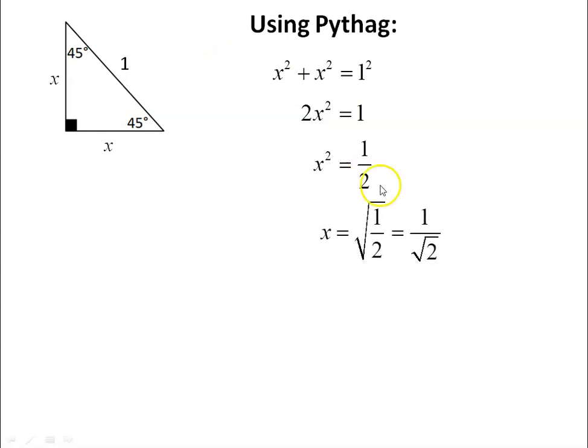This is the correct answer, just not written in the correct way. I can't have a radical in the denominator. So I would have to rationalize this, which means multiply the top and the bottom by root two. And that works out to be root two over two.